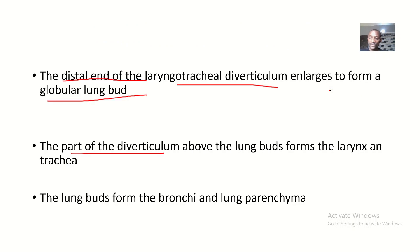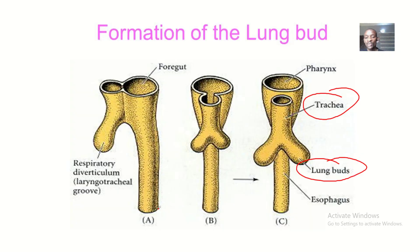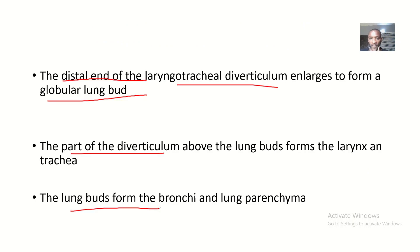The lung buds will then proceed to form the bronchi and the lung parenchyma, and this is the onset of the development of the lungs — the embryology of the lungs. That's how simple the formation of the lung is.